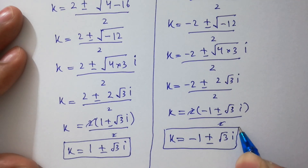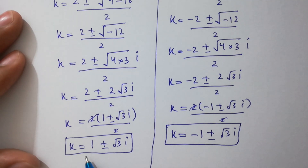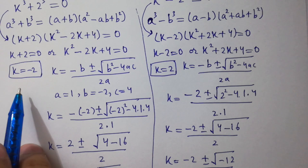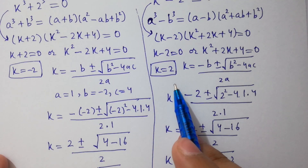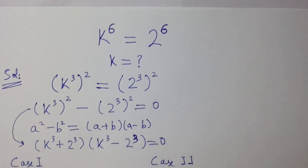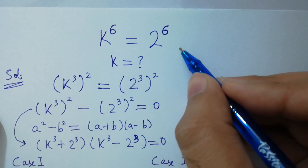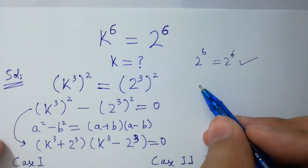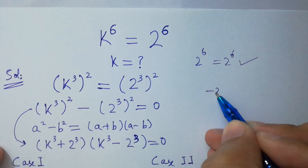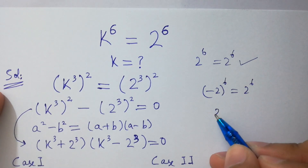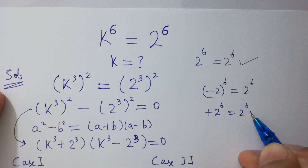Simplifying, k equals minus 1 plus or minus square root of 3i, which is our second complex solution. So in summary: first real solution k equals minus 2, second real solution k equals 2, first complex solution k equals 1 plus or minus square root of 3i, second complex solution k equals minus 1 plus or minus square root of 3i. Checking k equals 2: 2 to the power 6 equals 2 to the power 6 — satisfied. Checking k equals minus 2: (minus 2) to the power 6 equals 2 to the power 6 since 6 is even — also satisfied.